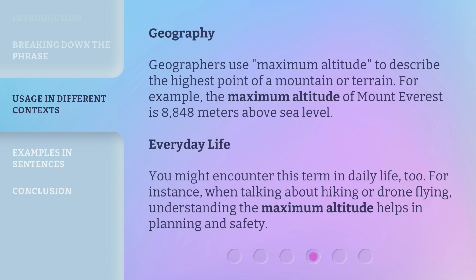In geography, geographers use 'maximum altitude' to describe the highest point of a mountain or terrain. For example, the maximum altitude of Mount Everest is 8,848 meters above sea level. In everyday life, you might encounter this term too — for instance, when talking about hiking or drone flying, understanding the maximum altitude helps in planning and safety.